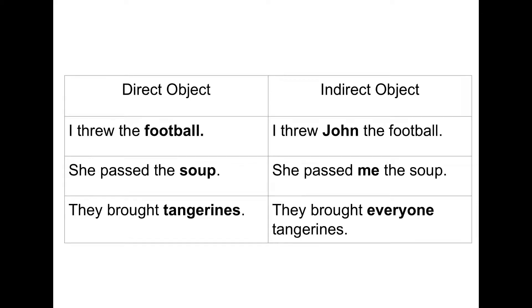Let's compare the two different types of objects, direct and indirect. I threw what? The football — direct. I threw the football, and who did I throw it to? I threw John the football — indirect. She passed what? The soup — direct. She passed the soup to who? She passed me the soup — indirect. They brought what? Tangerines — direct object. Who did they bring them to? They brought everyone tangerines — indirect object.